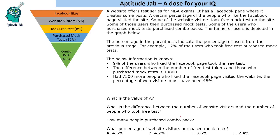In a funnel, the Facebook page has the largest number. Each subsequent level is a subset of the previous one. A percent of people who liked the Facebook page visited the website; B percent of website visitors took the free test; 12 percent of free test takers purchased the mock test; and (A minus 5) percent of mock test purchasers purchased the combo pack.